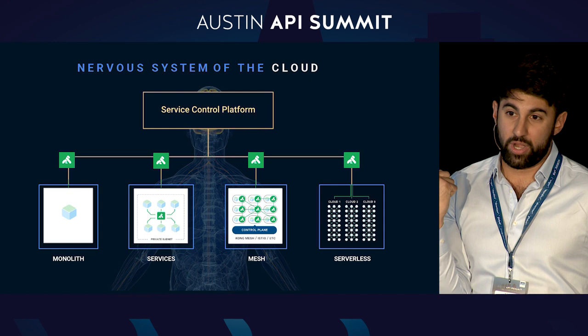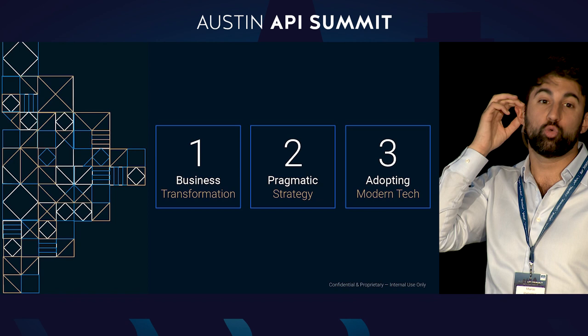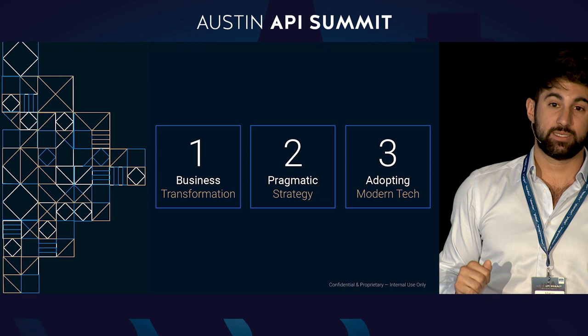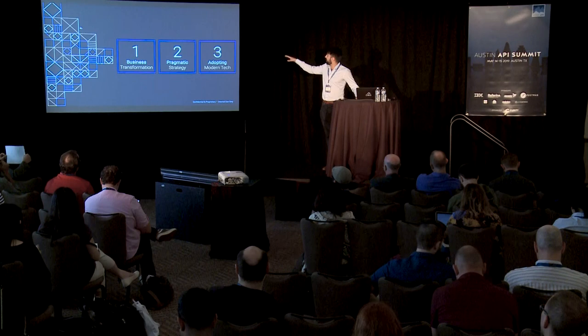To recap: business transformation — do we need to move to microservices? And if we do, let's do it in a pragmatic way. Let's not go all the way through in an academic project, but do something that delivers business value today to both the business and the team. As well as adopting modern technology which enables this transition — a good choice of data planes and control planes which allows us to visualize what's happening in our architecture. Thank you.